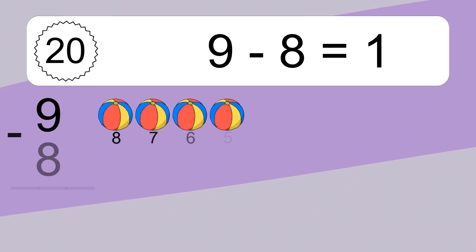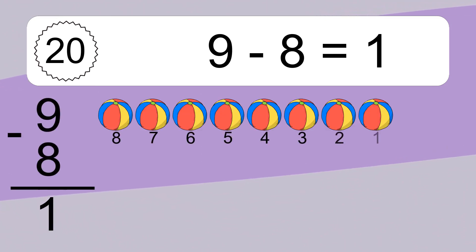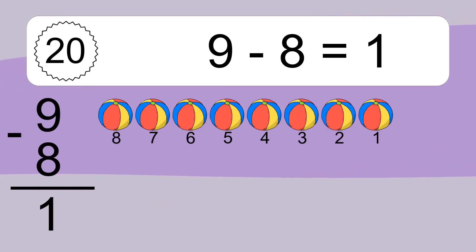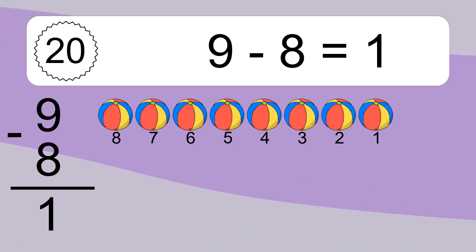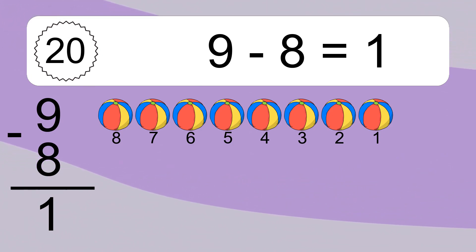9 minus 8 equals what? 9 minus 8 equals 1. Let's count it. 8, 7, 6, 5, 4, 3, 2, 1.